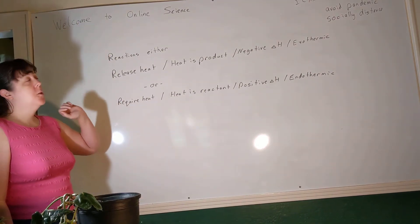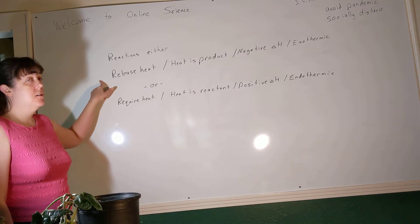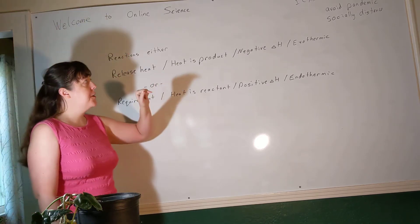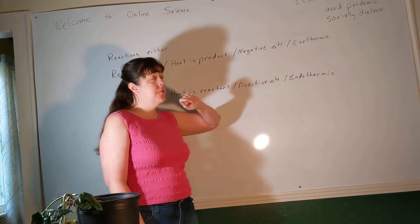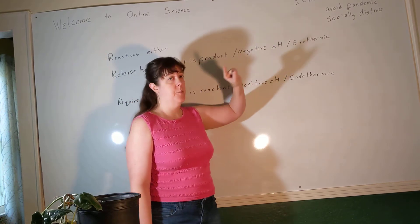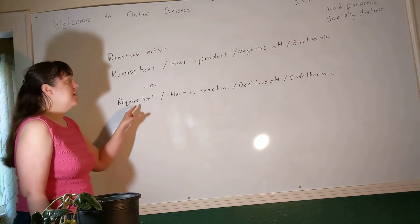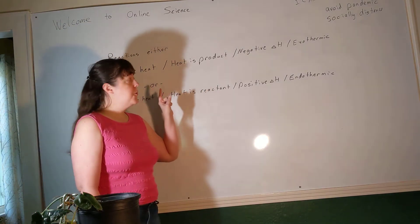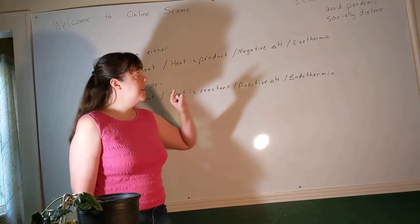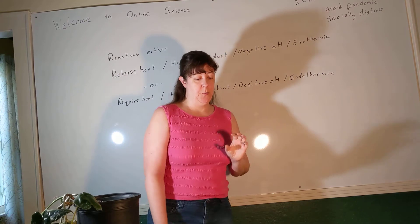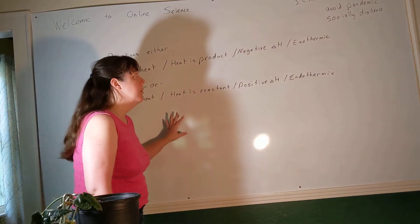We know already that chemical reactions either release heat, in which case heat is a product of the reaction, we have a negative sign for delta H, and we call it exothermic, or a chemical reaction might require heat, in which case heat is a reactant for the reaction, we have a positive sign for delta H, and we call it an endothermic reaction. This we already know.